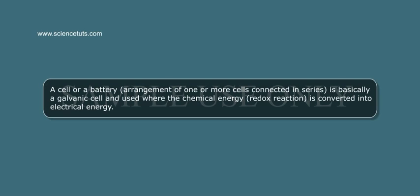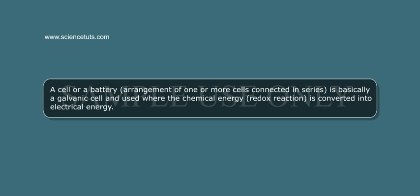A cell, or a battery — an arrangement of one or more cells connected in series — is basically a galvanic cell used where chemical energy from a redox reaction is converted into electrical energy.